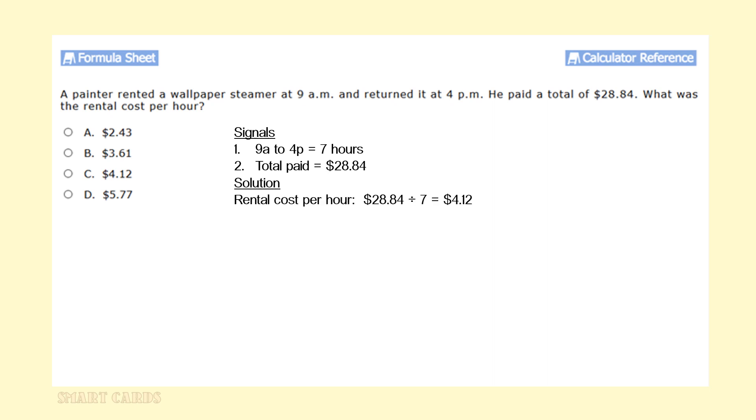To find the solution to this problem, we simply divide the total pay, which is $28.84, by the number of hours that he rented the wallpaper steamer, which was seven hours. And we're going to get an average of $4.12 as the rental cost per hour. That would give us answer option C.